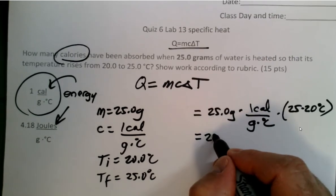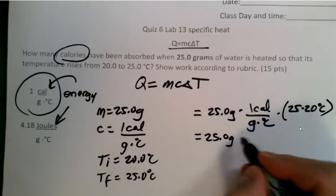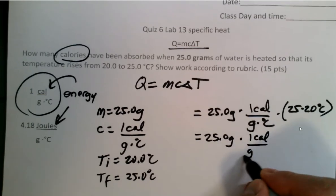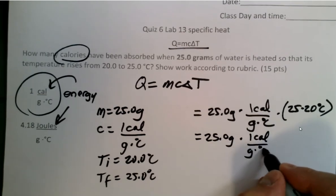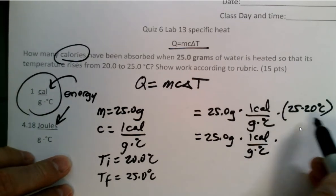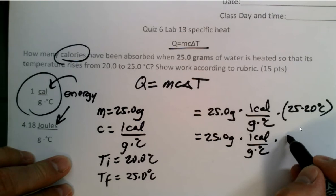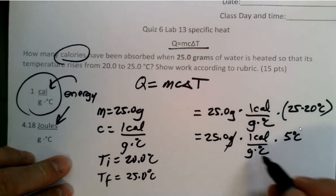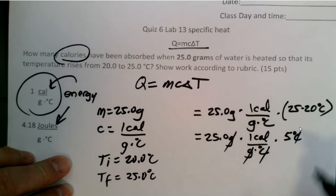Okay, let's rewrite it again. 25.0 grams multiplied by one calorie per gram degree Celsius, multiplied by 5. 25 minus 20 is 5, isn't it? 5 degrees Celsius. This allows us to cancel grams, degrees Celsius.